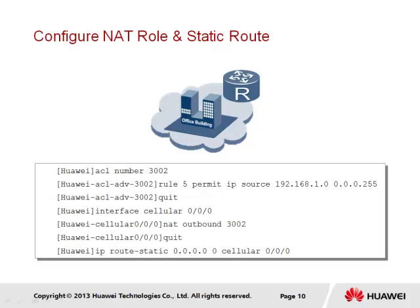Since we are required to support hosts considered part of an internal network, we must implement NAT to allow private addresses to be translated before reaching the external network. This is achieved through the defining of rules, which are associated here with the NAT outbound command on the cellular interface and ACL number 3002. If no other route is available due to the primary route failing, we must ensure that IP traffic is redirected to the cellular interface to be carried over the 3G network. This is achieved through the default IP static route.